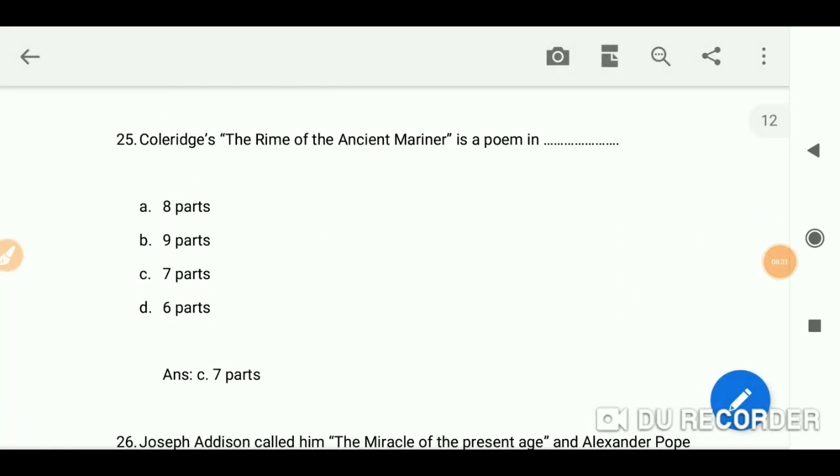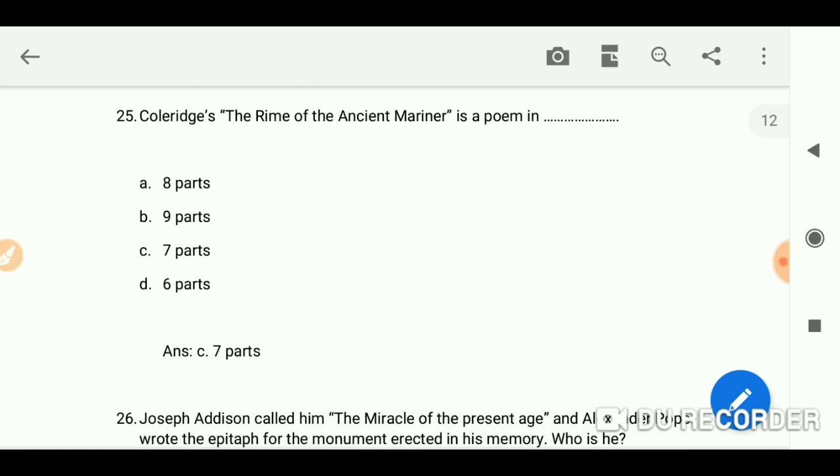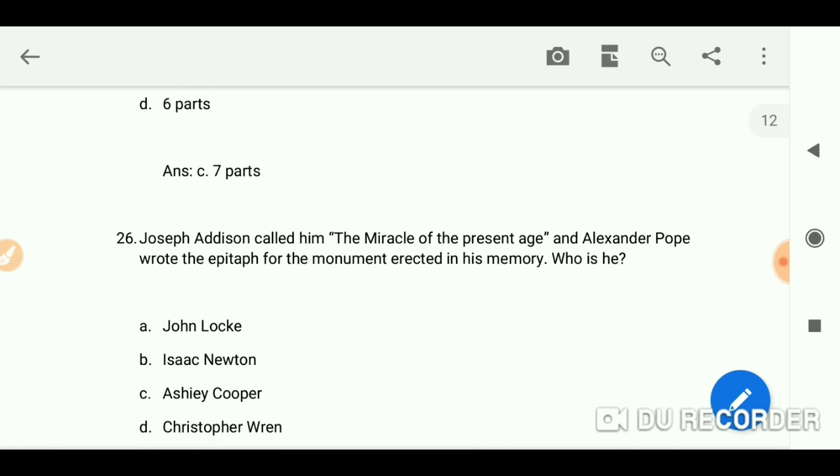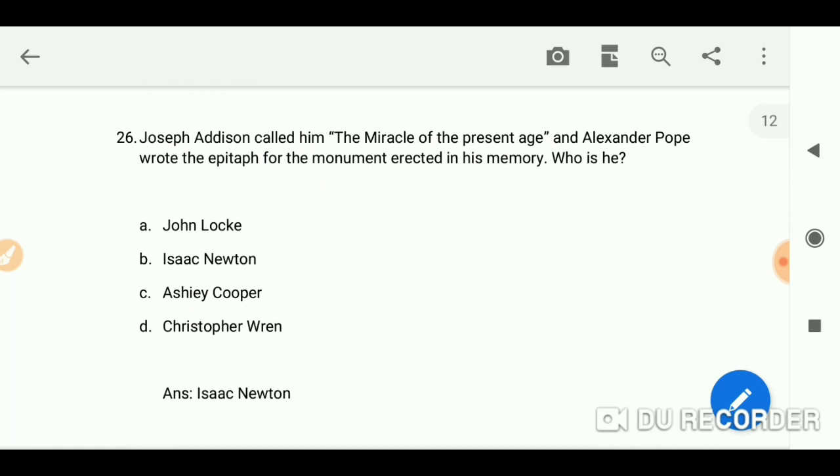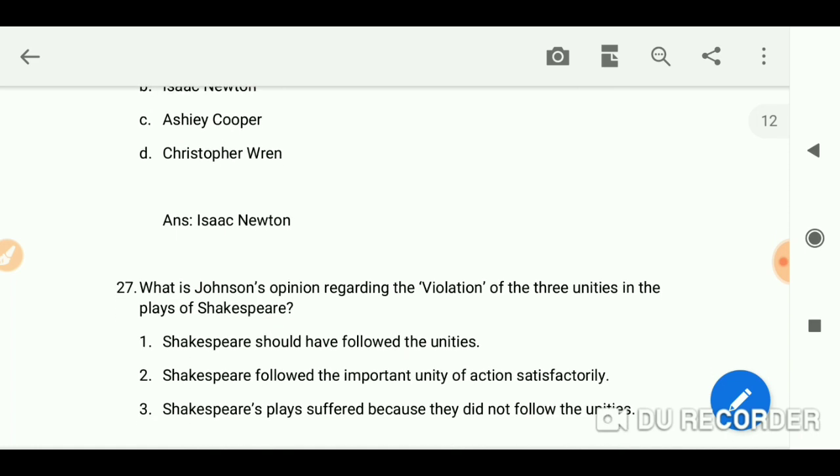Coleridge's The Rime of the Ancient Mariner is a poem in seven parts. Joseph Addison called him the miracle of the present, and Alexander Pope wrote the epitaph of the monument erected in his memory. Who is he? Isaac Newton.